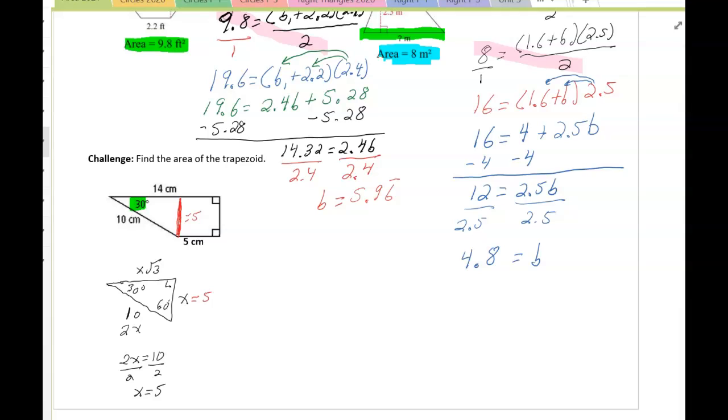At this point, we could use the formula. Area is base 1 plus base 2 times the height divided by 2. We know that the bases are 5 and 14. We calculated the height to be 5, and we're going to divide that by 2. So typing this into our calculator, 19 times 5 divided by 2 gives us 47.5 centimeters squared.